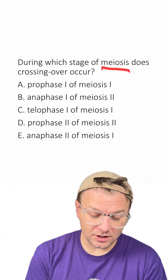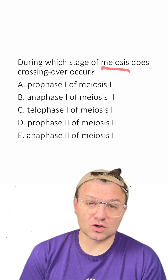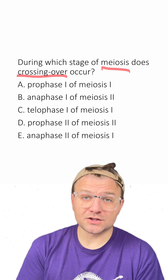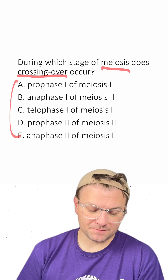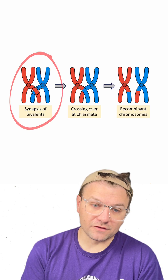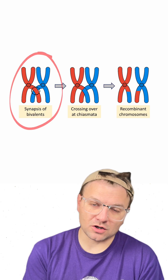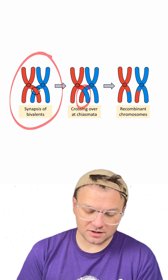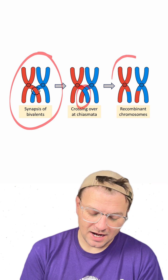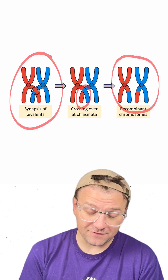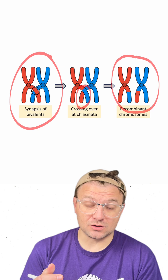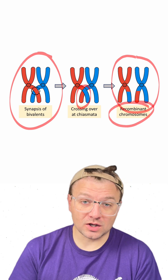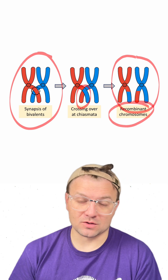During which stage of meiosis does crossing over occur? Let's do a quick review before we look at our answers. Remember that crossing over is when homologous chromosomes pair up and exchange genetic information, and the DNA in those chromosomes afterwards is going to be different. We call these types of chromosomes recombinant chromosomes.